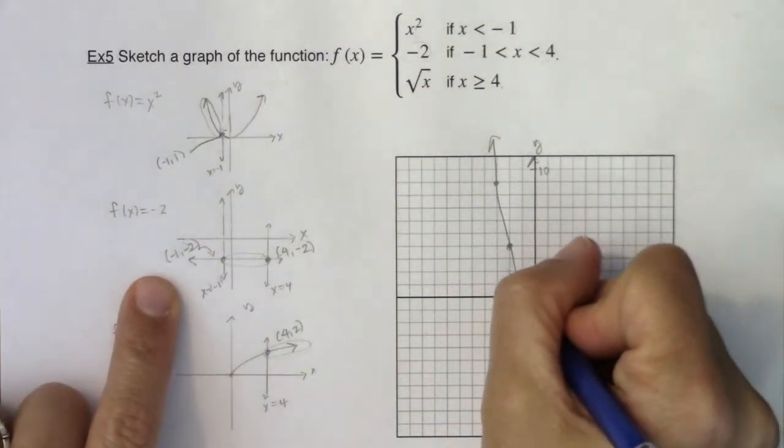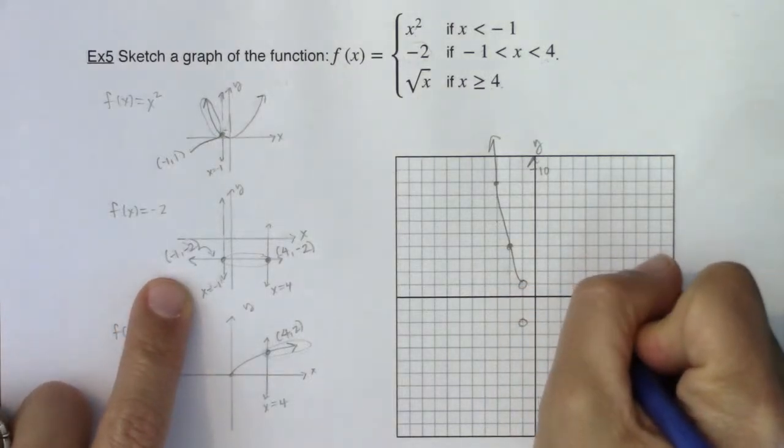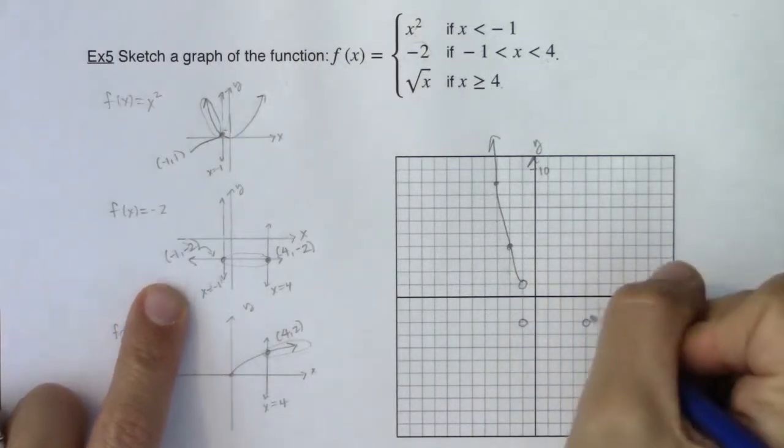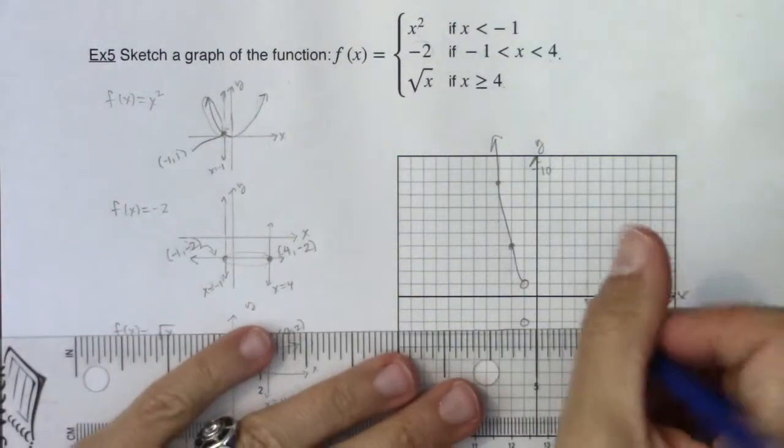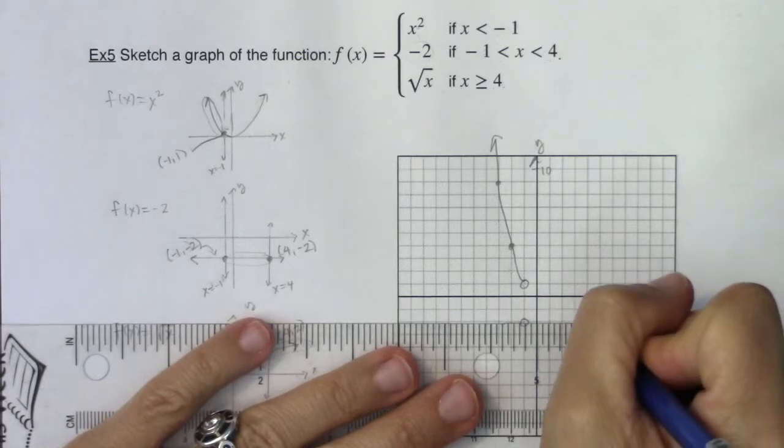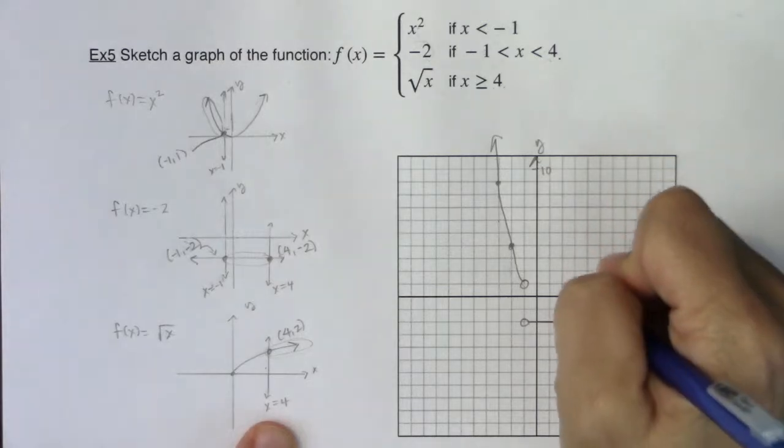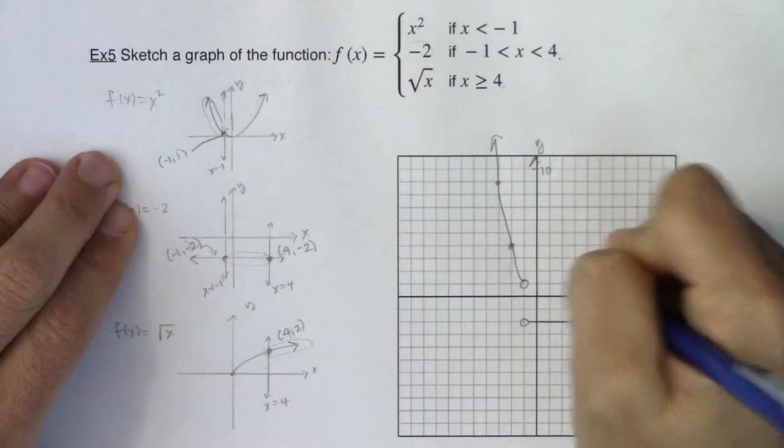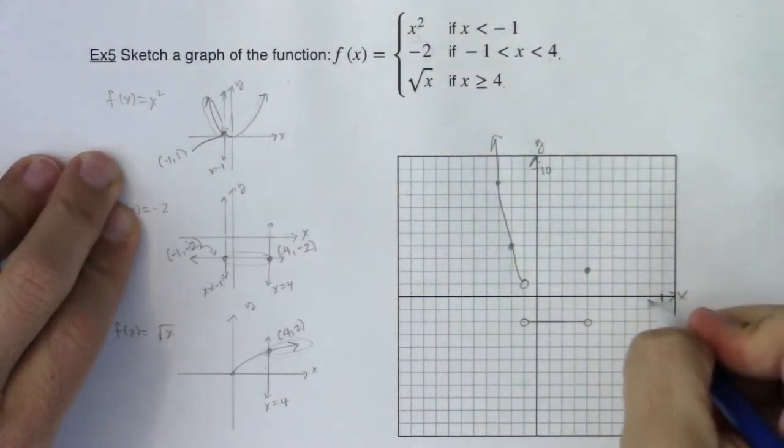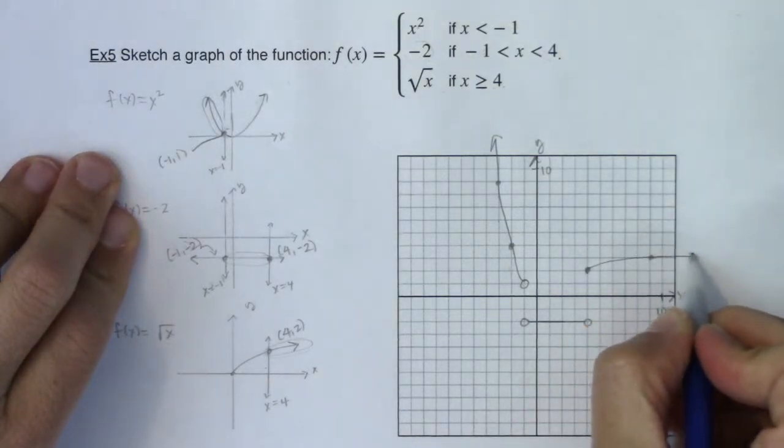I'm going to go from negative 1, negative 2, to 4, negative 2. And I want that constant function in there. And then I want to go to 4, 2. Now, I do have greater than or equal to here, so I will finally put in a closed dot. I know that if I plugged 9 in, I would get 3 back out. So let me use that as another guide mark. And there we go.